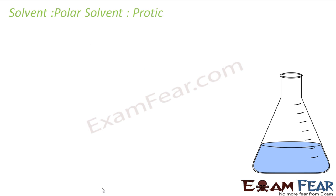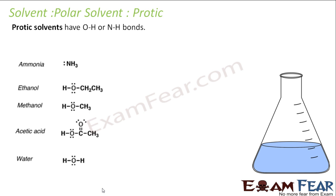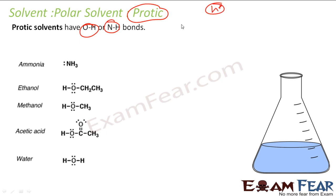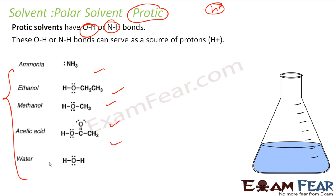In polar we have something called polar protic. So what is protic? Protic is one which has an OH or NH bond, and they generally give H+ ion. They have OH or NH bond. For example: ammonia, ethanol, methanol, acetic acid, water — these are all my polar protic solvents. This is protic and this is polar, so they are called polar protic solvent. This OH or NH bond serves as a source of proton, that is H+.